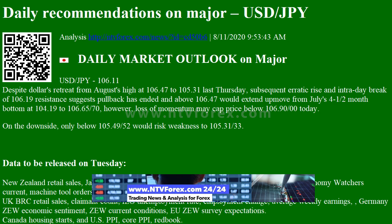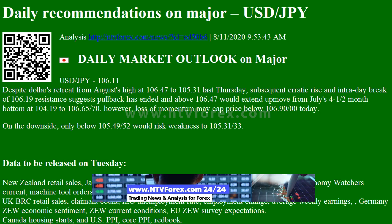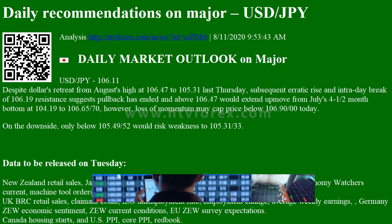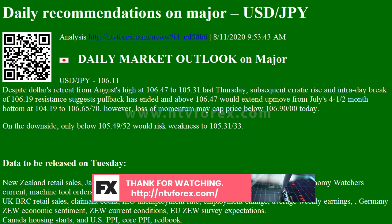USDJPY at 106.11: despite the dollar's retreat from August's high at 106.47 to 105.31 last Thursday, the subsequent erratic rise and intraday break of 106.19 resistance suggests the pullback has ended. Above 106.47 would extend the up move from July's 12-month bottom at 104.19 to 106.65–70. However, loss of momentum may cap price below 106.90 today.